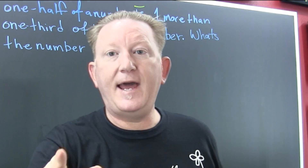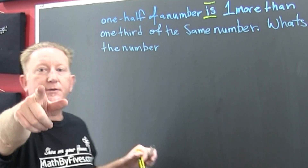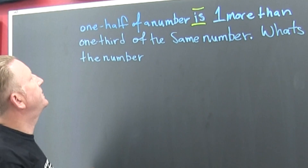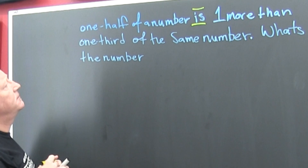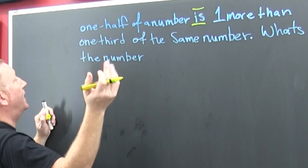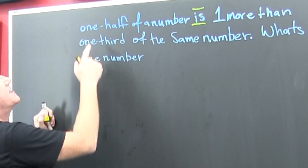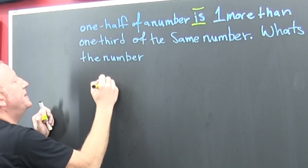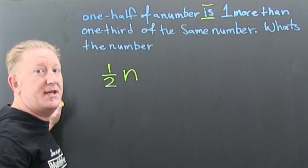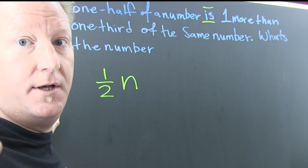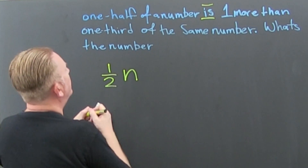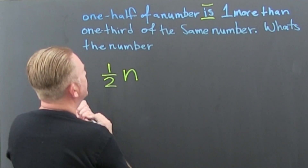So, to cut our work in half, what I have to do is translate the left side, then worry about the right side. To the left of the equal sign: one half of a number. I'm just going to use N — you can use any letter you want, you could even use the first letter of your name.